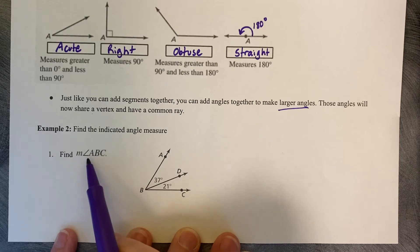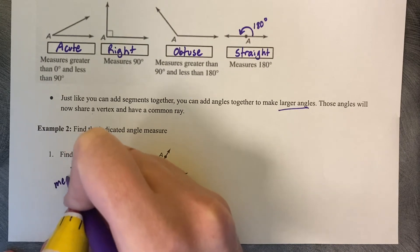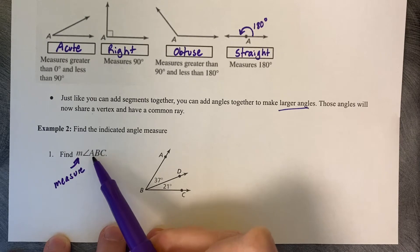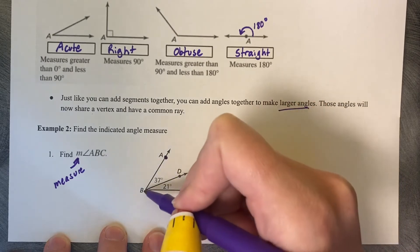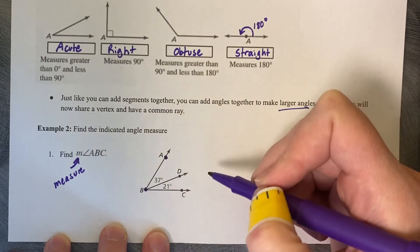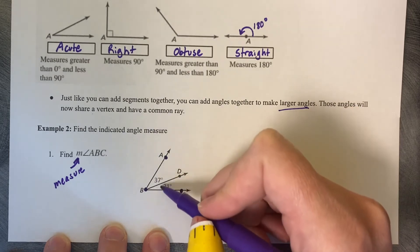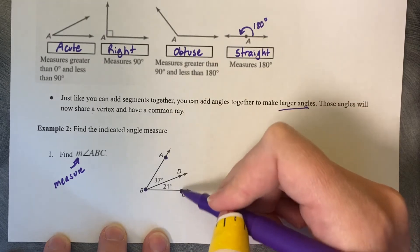Find M angle measure angle ABC. So this little M right here stands for measure. So it's asking you to find the measure of angle ABC. So that means to start on point A, go to vertex B, and end on ray C. So we are looking for the entire measure of this angle in between A and C.